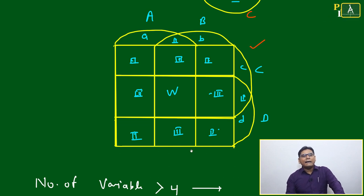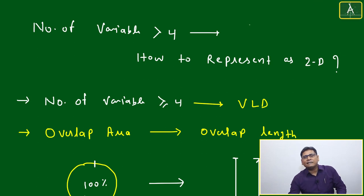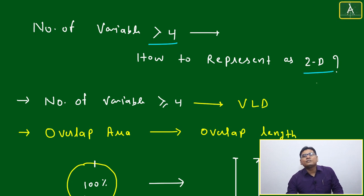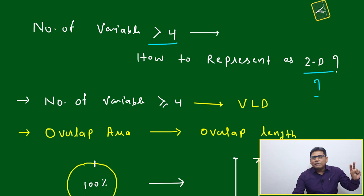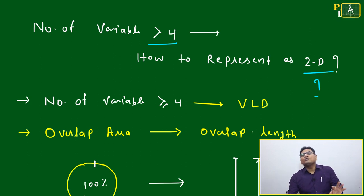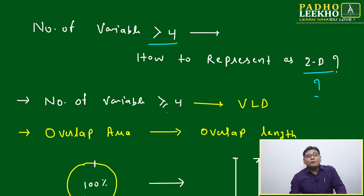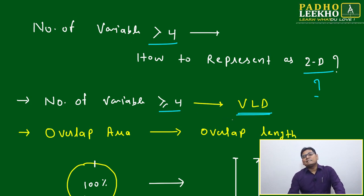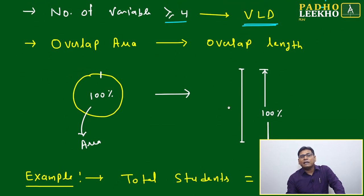The key issue arises when the number of variables exceeds four. If you have two variables, two circles suffice; three variables use three circles; four can be represented with a square arrangement. But when the number of variables is greater than or equal to five, the Venn diagram approach fails — and that is where VLD, the Vertical Line Diagram, becomes the only viable tool.